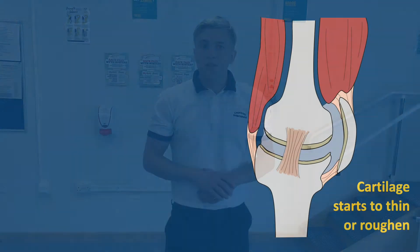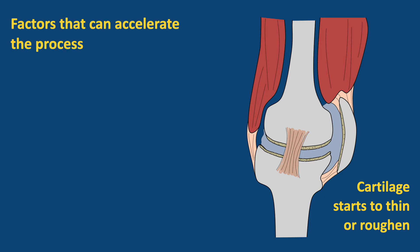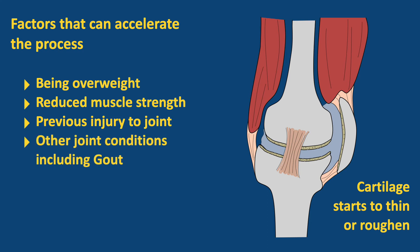Osteoarthritis starts when the cartilage starts to thin or roughen. This happens naturally as part of the ageing process. However, there are multiple factors that can accelerate this process and make it more likely for us to develop pain. These factors are being overweight, reduced muscle strength, sustaining a previous injury to the joint such as a fracture or ligament injury, or other joint conditions such as gout. There is also evidence to suggest that our genes can play a small part.